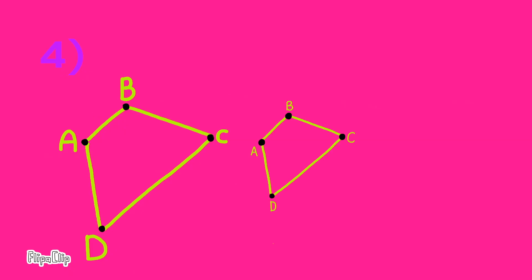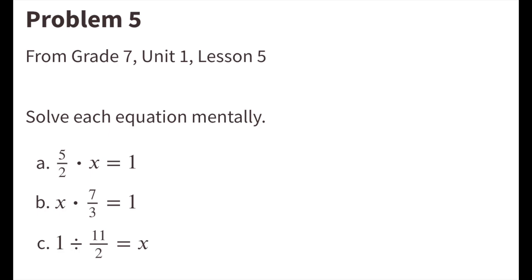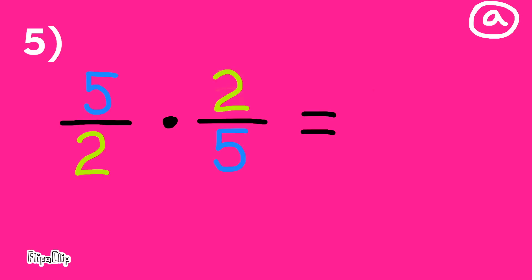Number 5: Solve each equation mentally. Part a: 5/2 times x equals 1. 5/2 times 2/5 equals 10/10, and 10/10 is the same as 10 divided by 10, or 1.